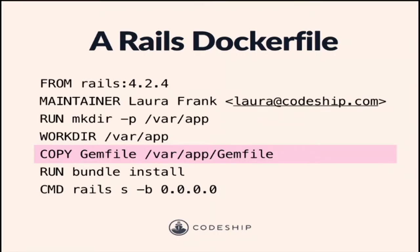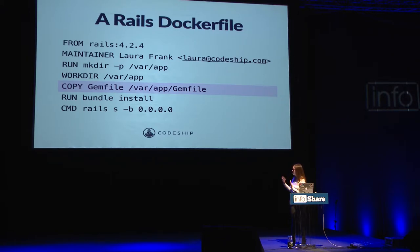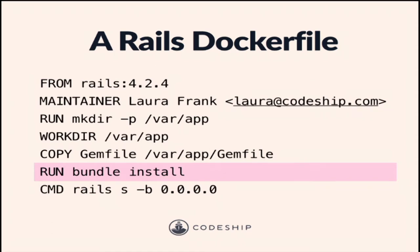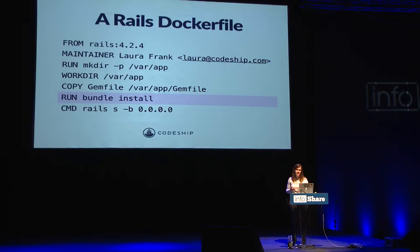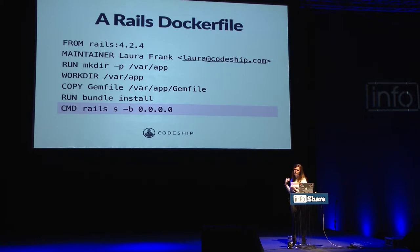Next, `COPY` takes a local file and puts it inside the image. There's also `ADD` which does some extra magic, but if you're confused about add versus copy, you probably want copy. So we copy the Gemfile into the image build context, then use `RUN` again to do a `bundle install`. Finally, the `CMD` instruction tells Docker what command to run when this image starts inside a container — in this case, `rails s` bound to the appropriate address.